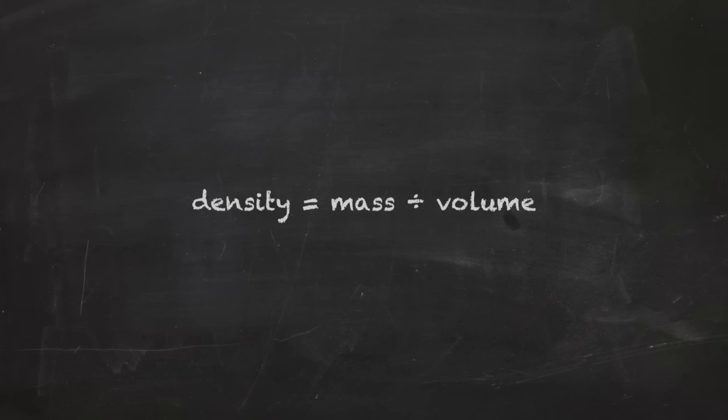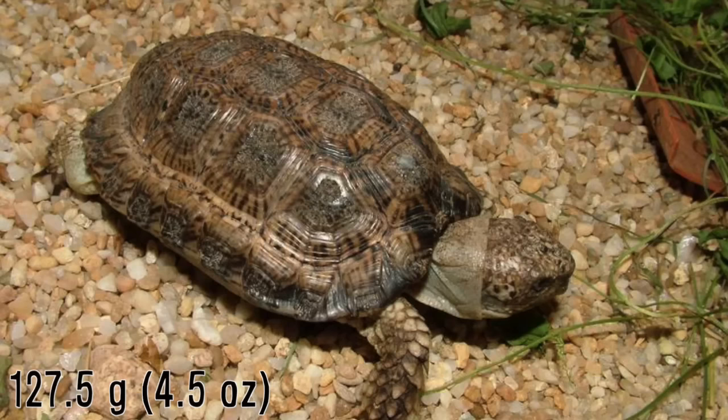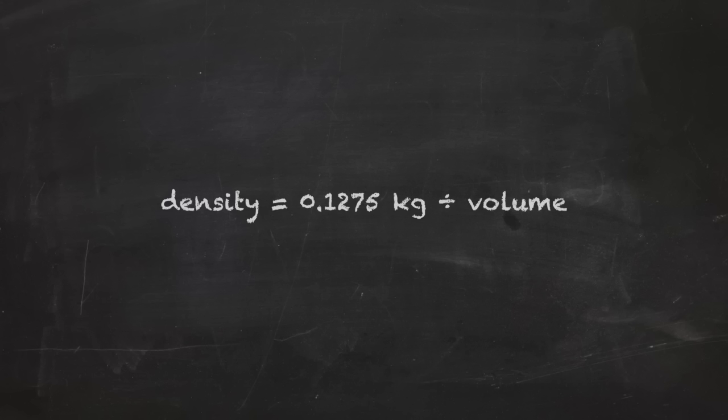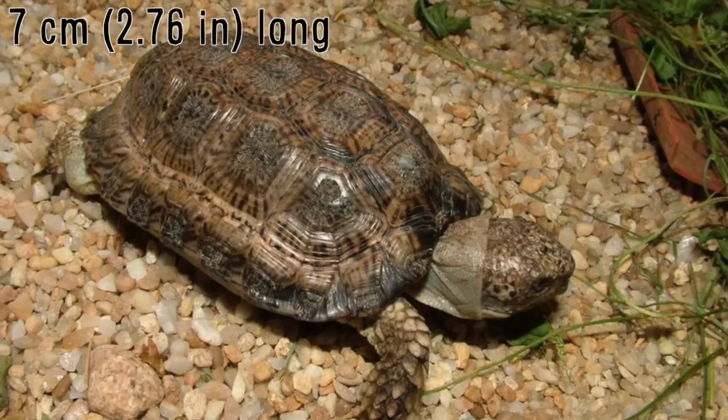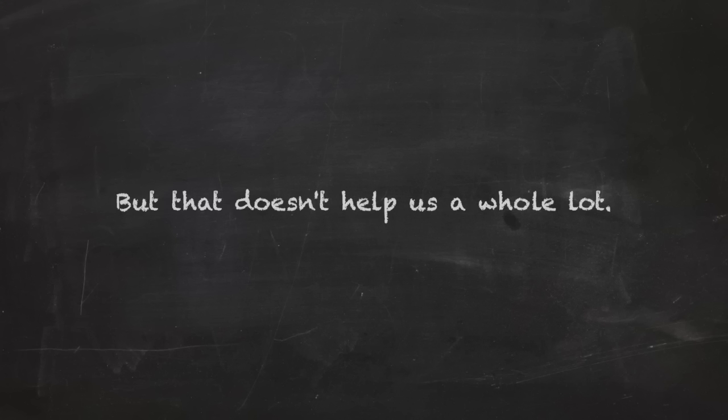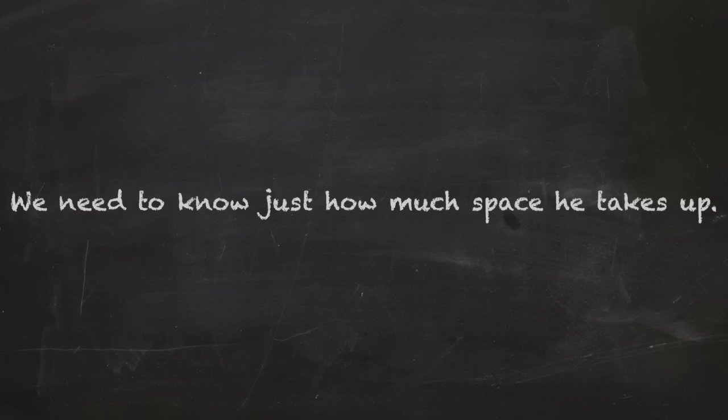Rearranging our little formula for mass, we find that density is mass over volume. We clearly know the mass of this little guy, so really all we need now to find the density of a turtle is his volume. Luckily, we know his measurements, but that doesn't help us a whole lot. We need to know just how much space he takes up.